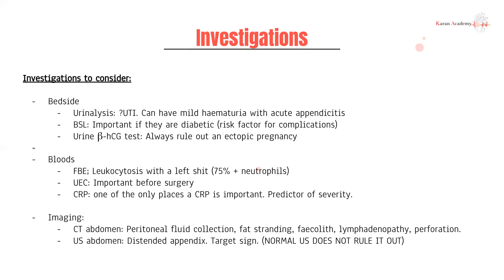A urinary beta-HCG test is always important in any female presenting with abdominal pain. With bloods: FBE to look for leukocytosis, which would typically have a left shift — meaning higher levels of neutrophils. A UEC is important before surgery to assess renal function. CRP can be a very good indicator of severity — for the patient I just described, they were clinically well but their CRP was about 300, when normal should be less than five.